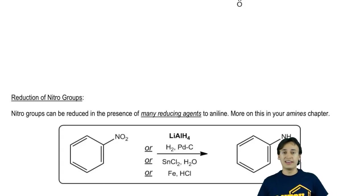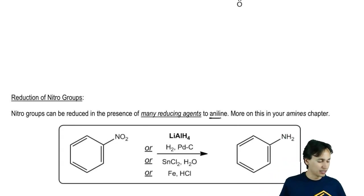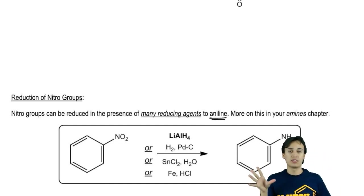It's worth noting that nitro groups or nitrobenzene is often used as a precursor to get to aniline. Remember that aniline is an amino group on a benzene ring. That's called an aniline molecule.